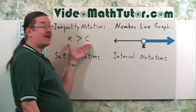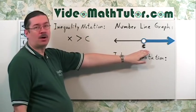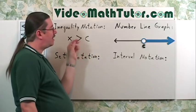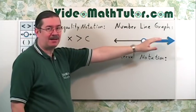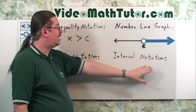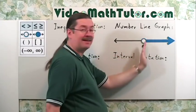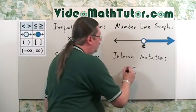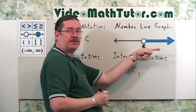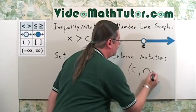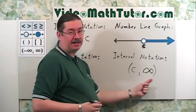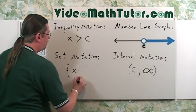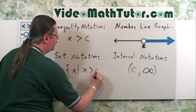X is greater than c. On the number line, mark c and put an open dot. Since it's greater than, shade to the right. For interval notation, from left to right, it starts at c with a parenthesis — since it's an open dot — and goes forever to the right to positive infinity, also with a parenthesis. For set notation: the set of all x's such that x is greater than c.